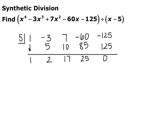For synthetic division, you take what makes your linear term equal to 0 and put that in the box. Since this is x minus 5, I'm going to put a positive 5 in the box. Outside the box are the coefficients of each term. Make sure if you're missing a term you put a 0 placeholder. With a degree 4, I should have 5 numbers up here. Bring down your first number — this stays a 1 — and then multiply: 5 times 1 is 5.